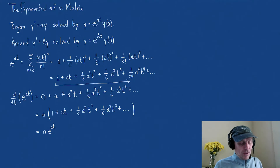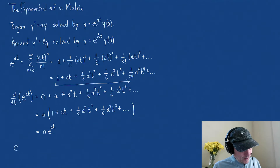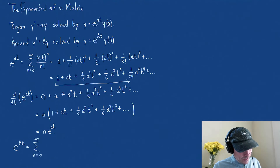But today's story is about e to the capital A t — the matrix exponential. Nothing changes in definition: E to the A t is again the infinite series as n goes from 0 to infinity of 1 over n factorial times A t raised to the nth power.